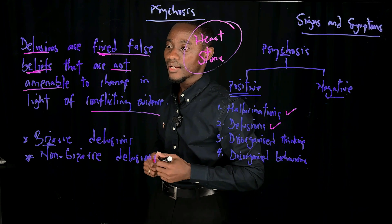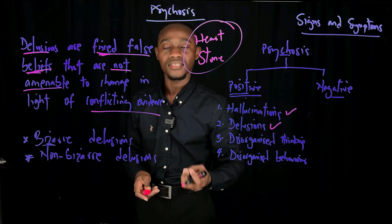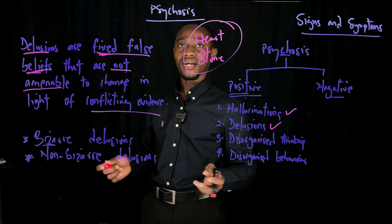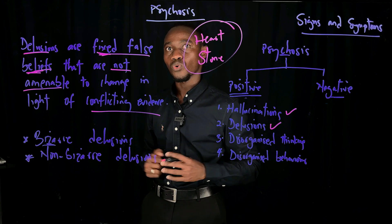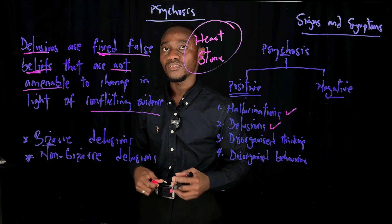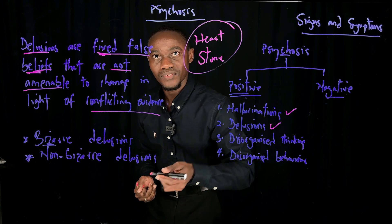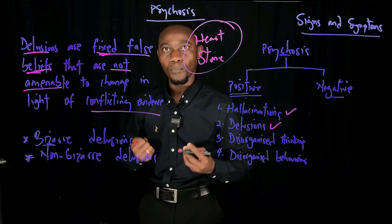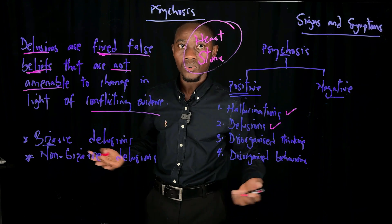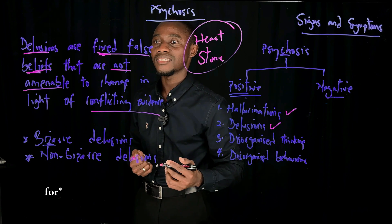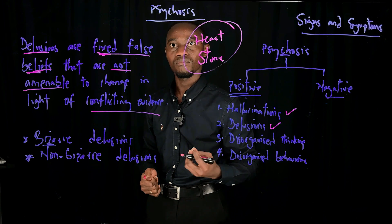Non-bizarre delusions are those that are not true, but are very possible in our context as humans and the culture of the person experiencing them. For example, if someone believes the police are actively out to get them for a crime they haven't committed — it is possible in reality for someone to be wrongly suspected, but in this case it isn't true. The person has a strong fixed false belief that the police are coming after them despite evidence to the contrary. This is a non-bizarre delusion.